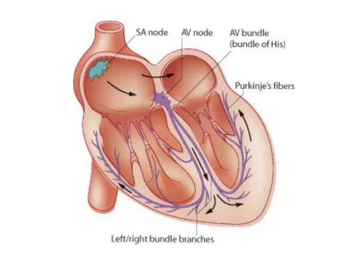We're going to go over the electrical conductivity of the heart and then move on to talk about the pressure-volume diagram and Wigger's diagram. Starting with basic anatomy: the inferior and superior vena cava dump blood into the right atria. When the atria contract, blood is pushed into the right ventricle, which then goes into the pulmonary trunk, to the lungs to pick up oxygen, then into the left atrium. When the left atrium contracts, it pushes blood into the left ventricle, which then pushes blood through the aortic valve into the aorta.